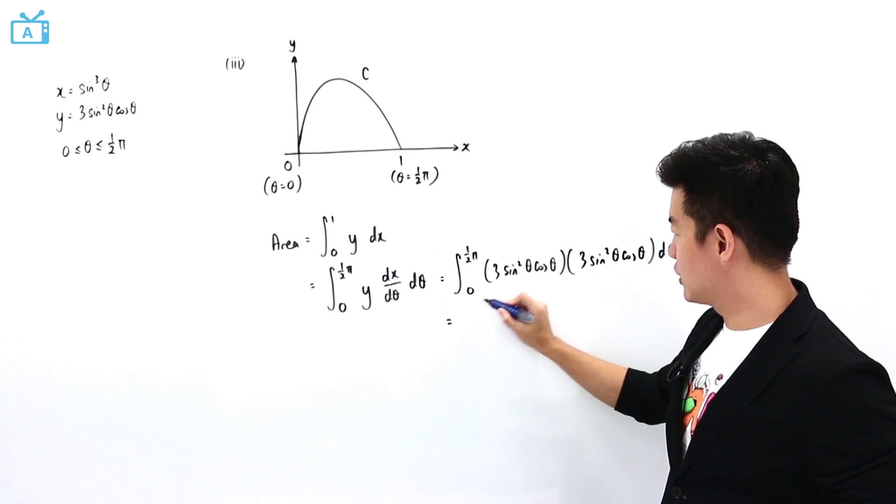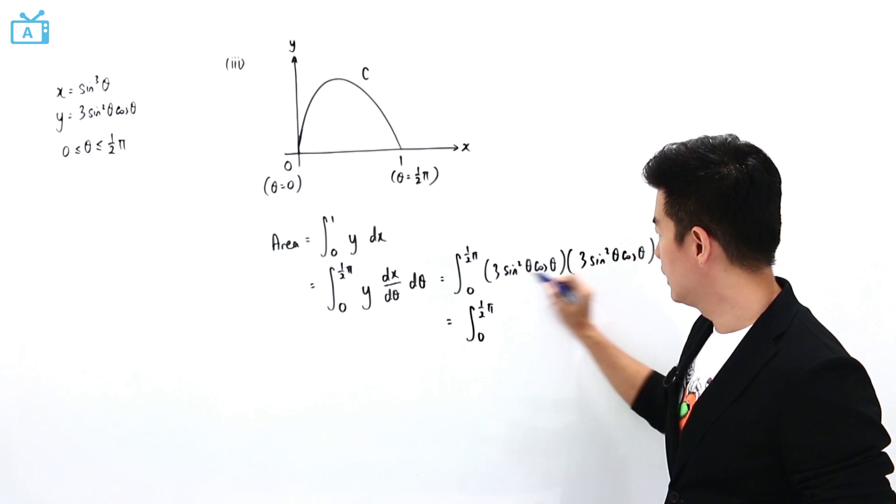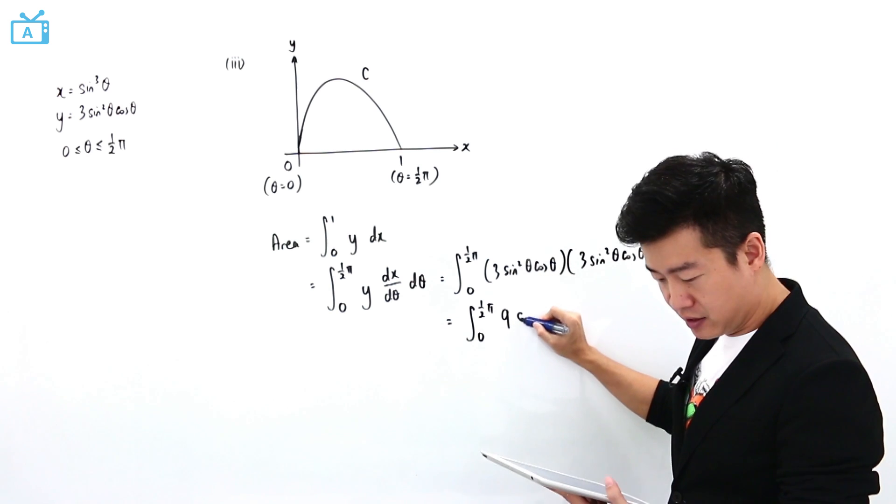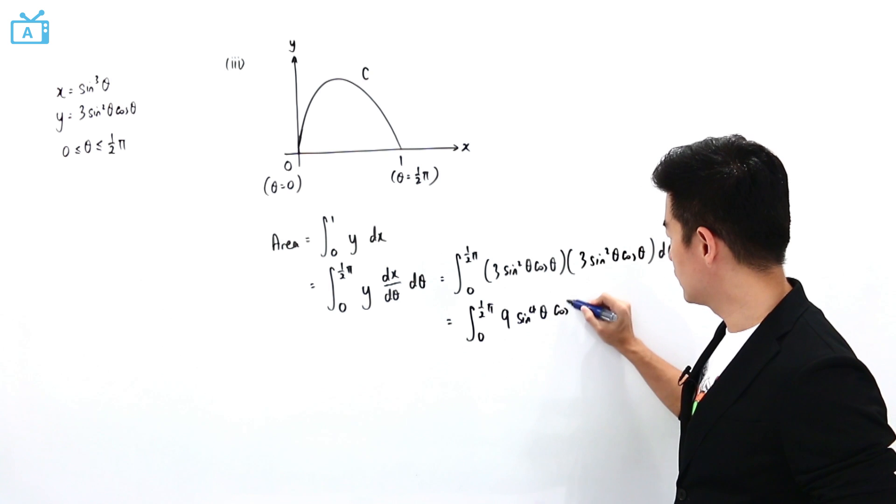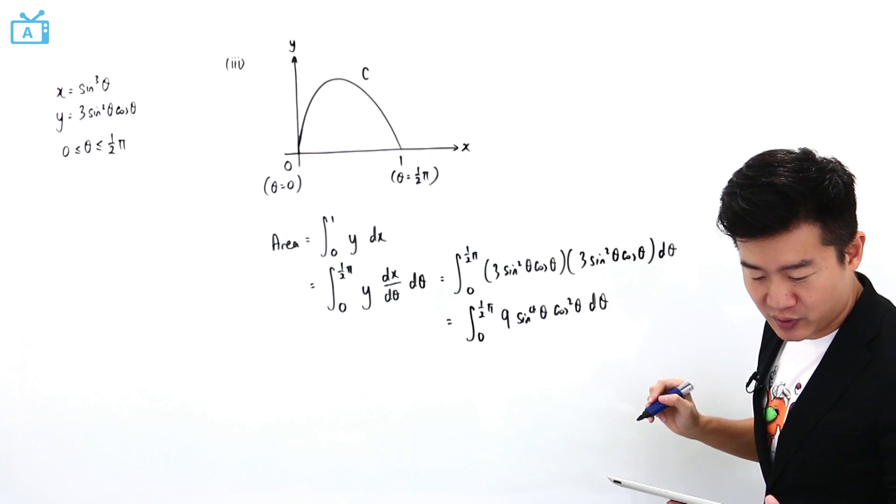So this is going to be equal to integration from 0 to half pi of 9 sine to the power 4 theta cosine squared theta d theta. And actually, this is what the question wants us to show.